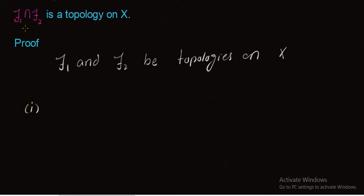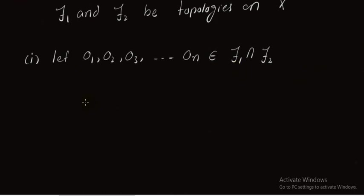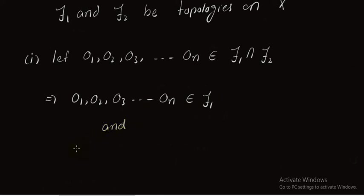We move to the first condition. We take finite elements from this intersection: let O1, O2, O3, ..., On belong to τ1 ∩ τ2. We prove that the intersection of these members again belongs to τ1 ∩ τ2. From here we can write that O1, O2, ..., On belong to τ1 and O1, O2, ..., On belong to τ2, which implies these elements belong to both τ1 and τ2.